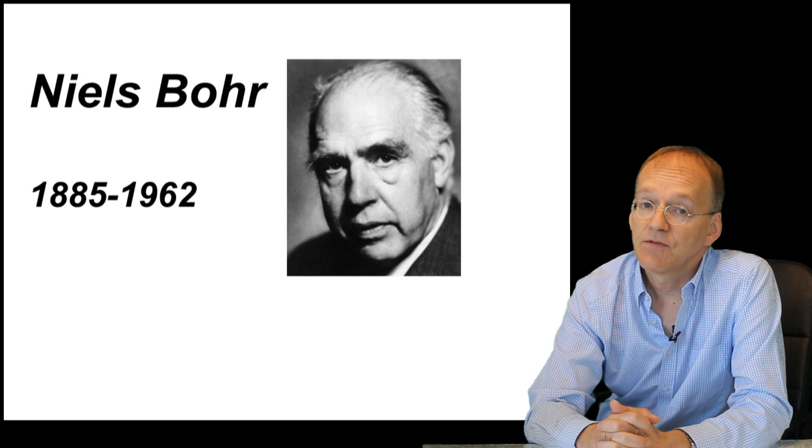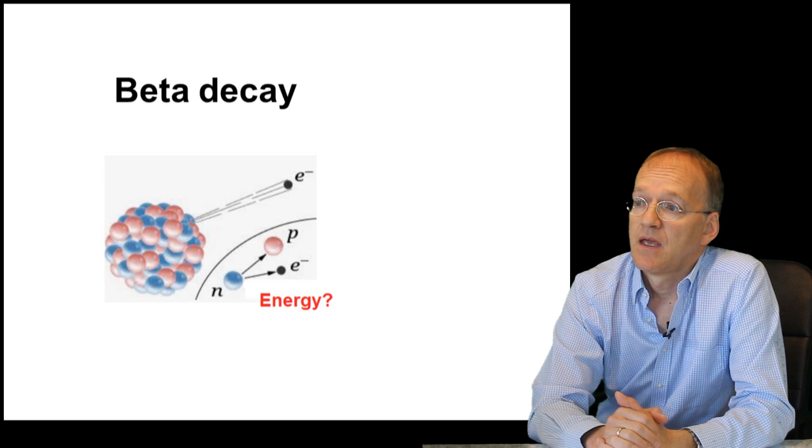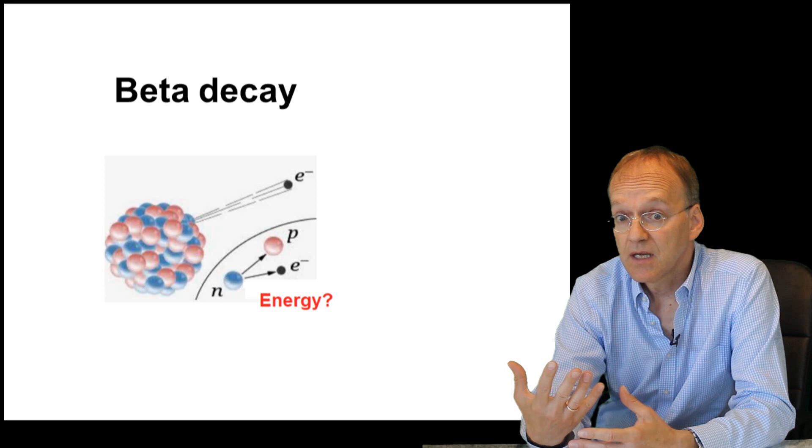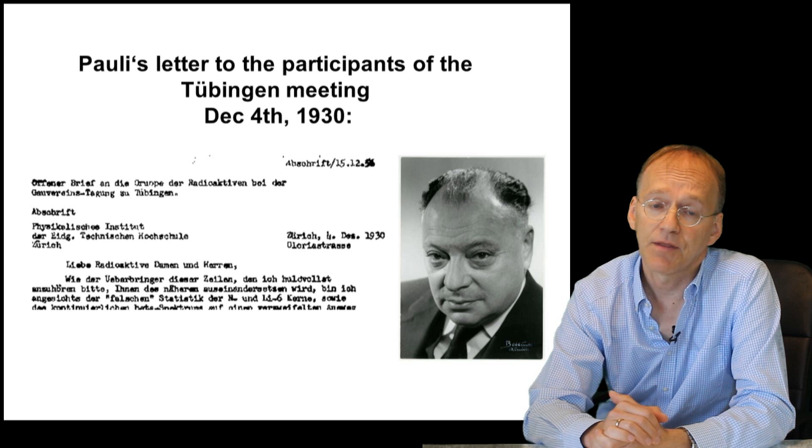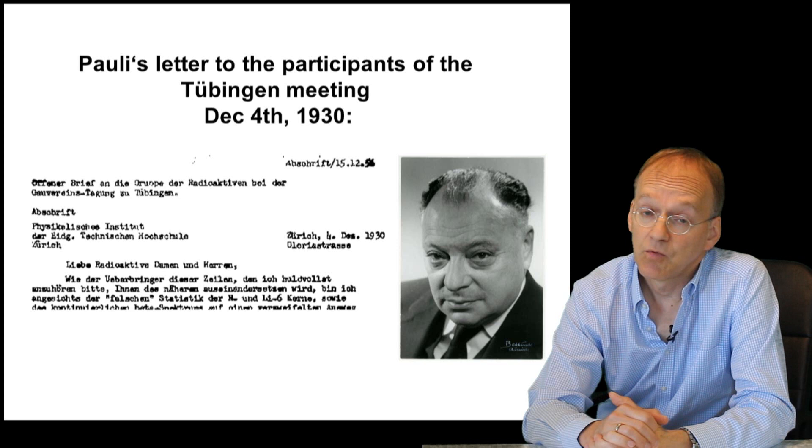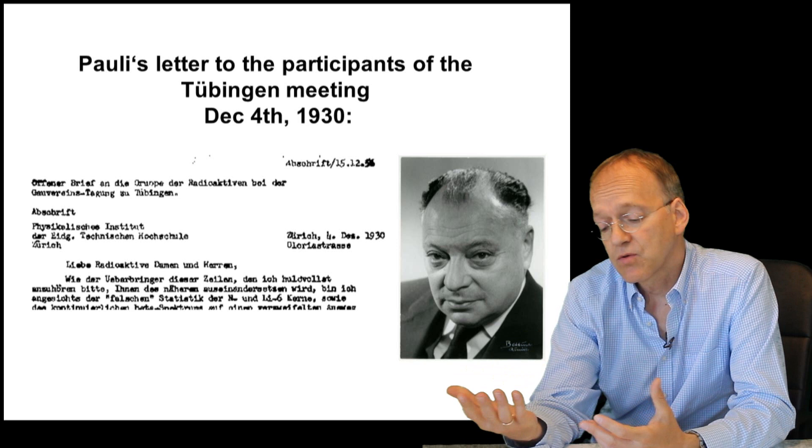And I give you a last example. One big riddle of physics is beta decay. A neutron decays into a proton and an electron and there is some energy missing. We'll have a separate video on that. But in short, it was a mystery where this energy had gone. And Wolfgang Pauli in 1930 postulated a new particle called neutrino that would carry along this missing energy.